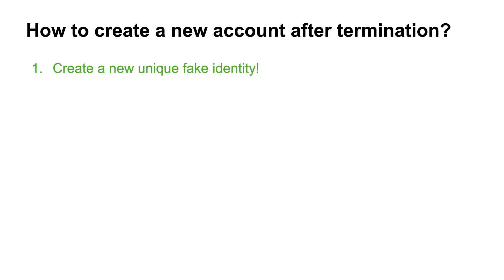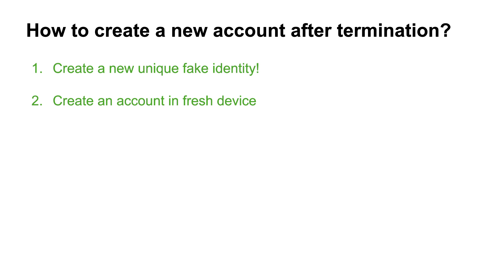Step one: create a new unique identity. You can use another person's account or details, but be alert about a few things. First, never connect your suspended Google account details with your new Google account. Never log in to both accounts on the same device, and if possible, do not send or receive emails to or from the suspended account.